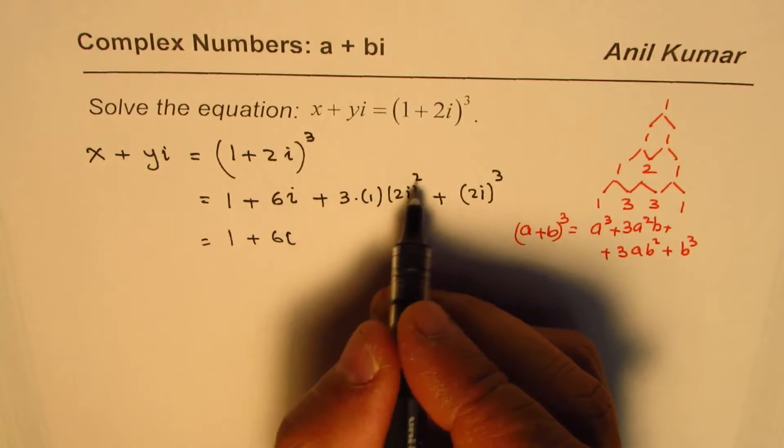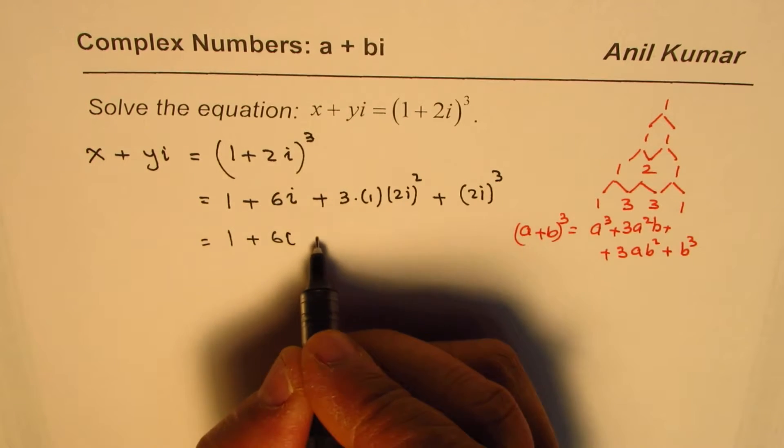So let me rewrite this as 1 plus 6i. Here we get 4 times 3 is 12 and i².